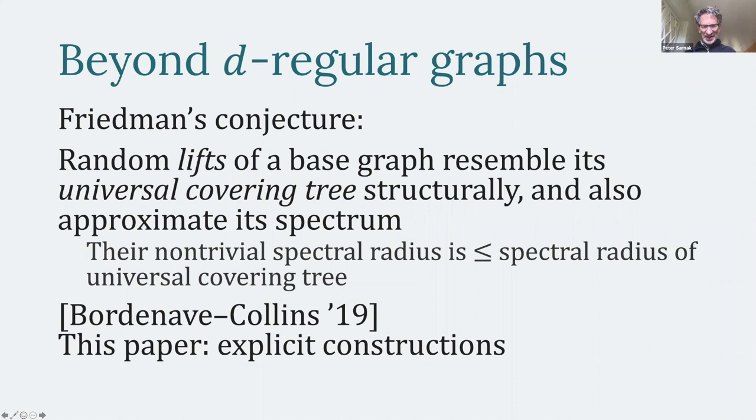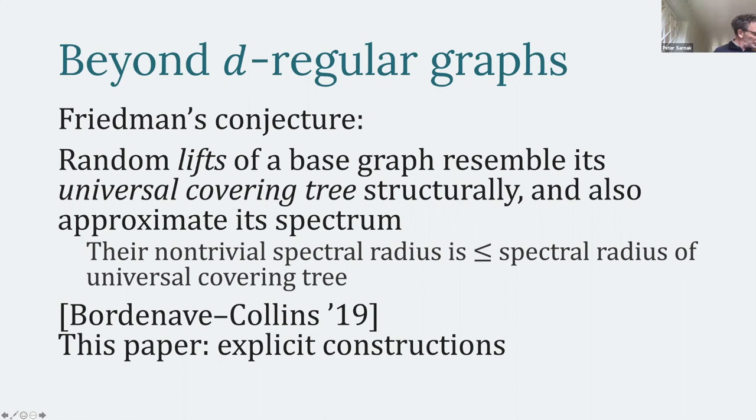A question about the theorem at the bottom: are you only talking about the spectral radius, or the entire spectrum? Meaning, with high probability the Benjamin-Schramm limit converges to the universal cover, so potentially the spectrum would have all the other gaps that the universal cover has. That is something I will get into in about three slides.